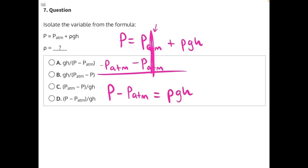Now we can look at our answer choices and see that only two match this order of P minus P_atm. That order is important. That would be answer choice A and answer choice D, so we can eliminate B and C. Now we can continue.